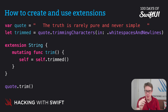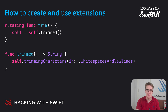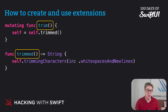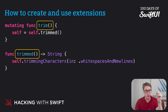Notice how the methods have slightly different names: self.trimmed returns the value, while trim changes it in place. This is intentional — it's part of Swift's naming guidelines. If you're returning a new value rather than changing it in place, you should use word endings like 'ed' or 'ing', for example trimmed or reversed. If you have a variable array, you can call sort on it — not sorted — to sort the array in place and change the current value, rather than making a new sorted array.